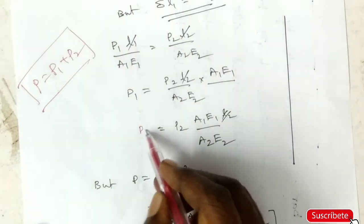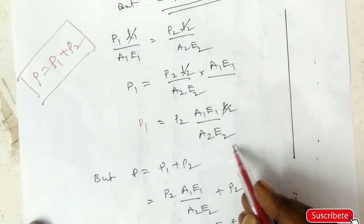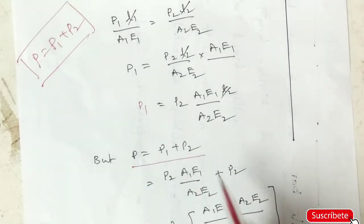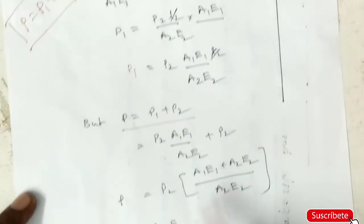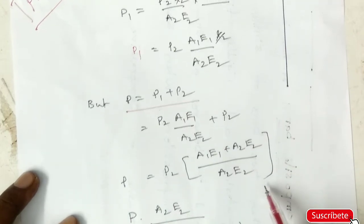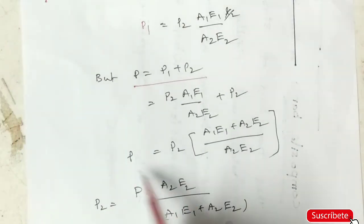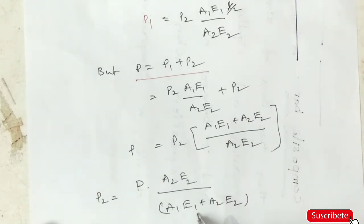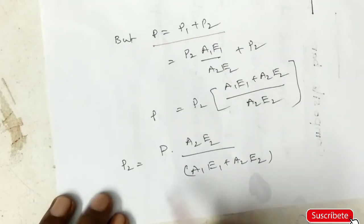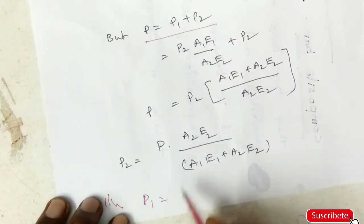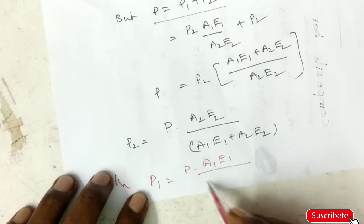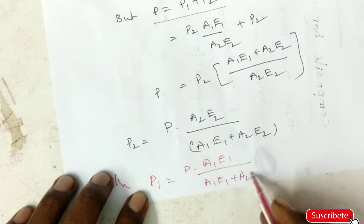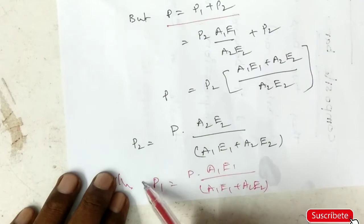So P1 equals P2 into A1 E1 by A2 E2. P equals P1 plus P2. Substitute P1 in this equation. Separate P2, so P2 equals P into A2 E2 by A1 E1 plus A2 E2. Similarly, P1 equals P into A1 E1 by A1 E1 plus A2 E2.